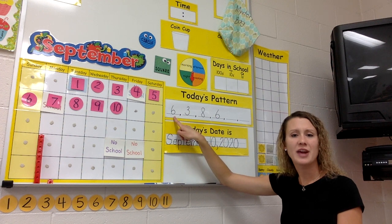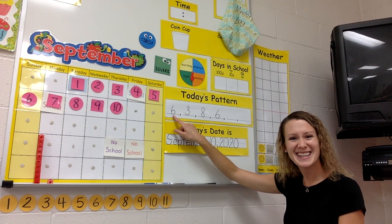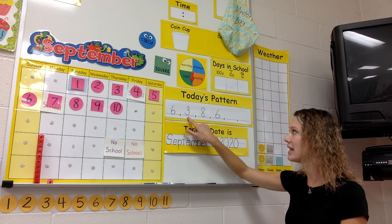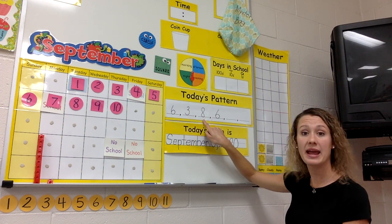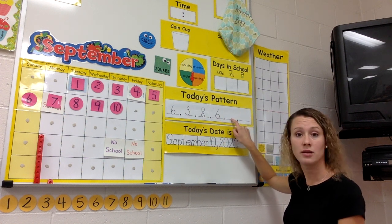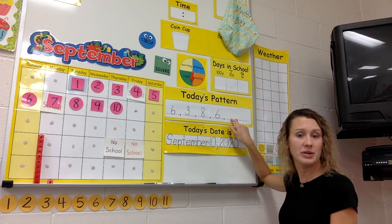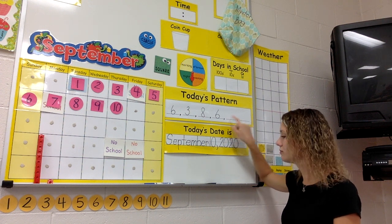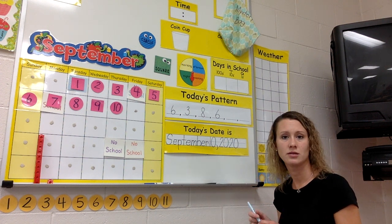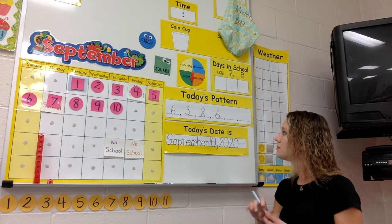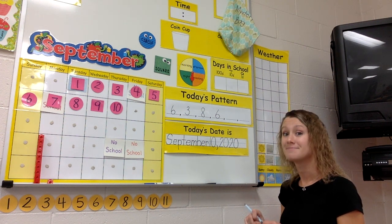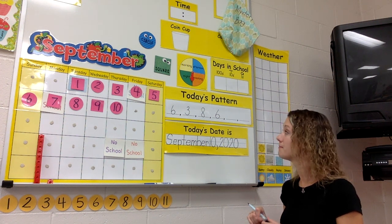Here's our pattern. Say it with me — ready, set, go: six, three, eight, six. What would come next? What comes after six? Yeah — three.